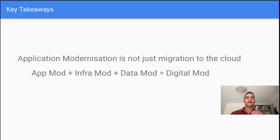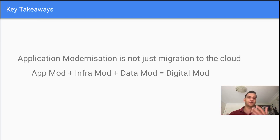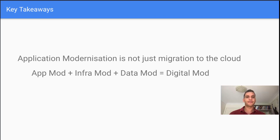Let's break it down further. Application modernization involves optimizing and enhancing existing applications, making them cloud-native, scalable, and agile. Simultaneously, infrastructure modernization focuses on refining the underlying IT infrastructure to harness the full potential of cloud resources. Finally, data modernization addresses the strategic management and utilization of your data, ensuring that it becomes a valuable asset for informed decision-making. Together, these interconnected components redefine the digital landscape, creating a symbiotic relationship that goes beyond simple migration — it is a transformative journey towards digital modernization.